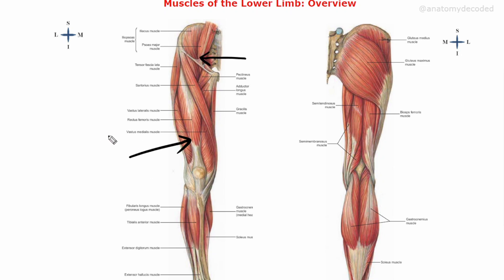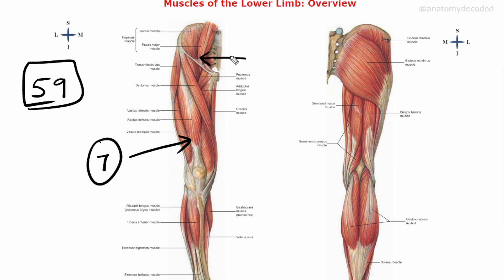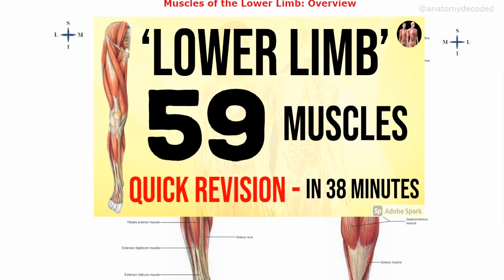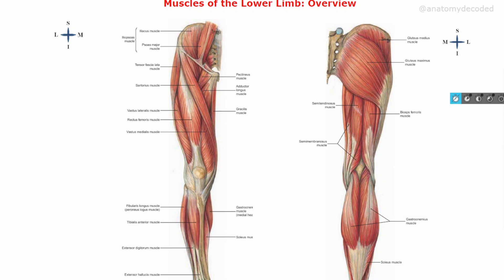Total 59 muscles are to be learned in the lower limb, out of which we'll be learning seven muscles in the anterior compartment of the thigh and three muscles in the anterior aspect of the hip. There is also one summary video of all 59 muscles available on this channel. In this particular video I have incorporated cadaveric images and concise notes of particular regions.